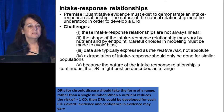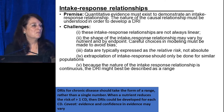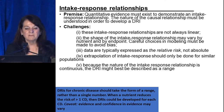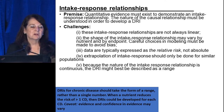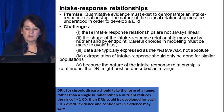DRIs for chronic disease should take the form of a range rather than a single number — we already have examples of this with the AMDR. When a nutrient reduces the risk of more than one chronic disease, DRIs could be developed for each chronic disease, but the evidence and confidence in the evidence may vary by chronic disease.